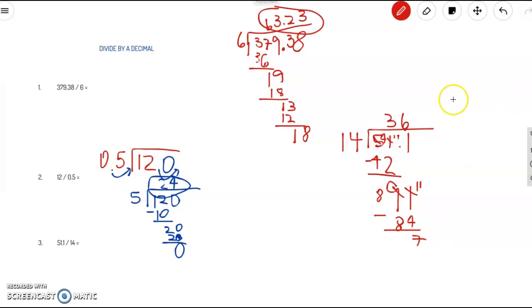Now we ran out of numbers, so we're going to add a 0 here. Bring down the 0. 14 goes into 70. How many times? 5 times. 5 times 14 is 70. We love it when there are no remainders.